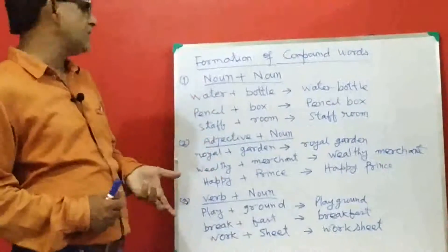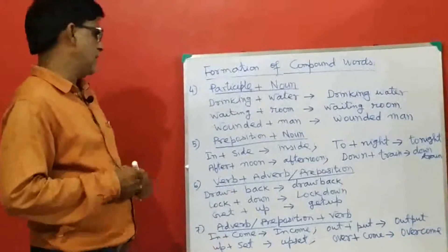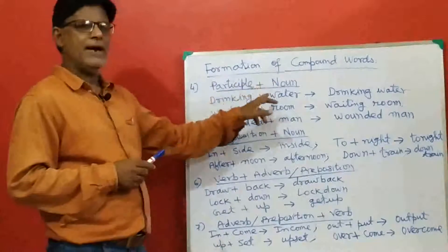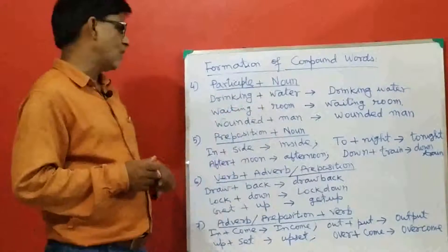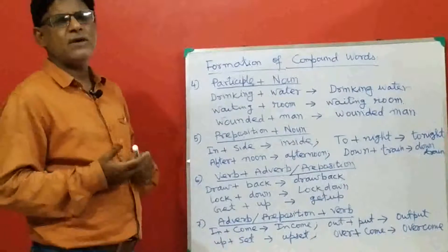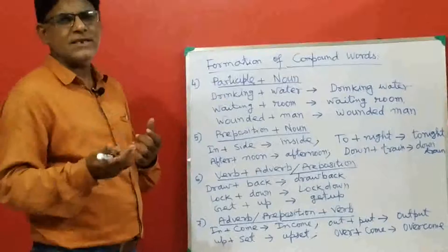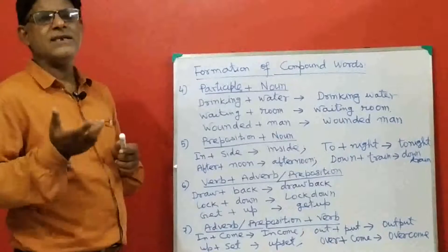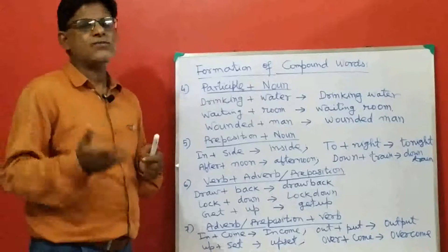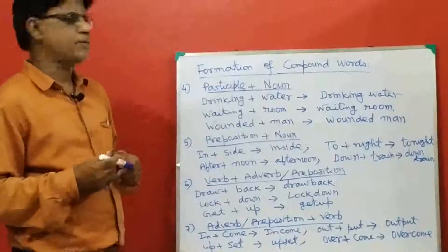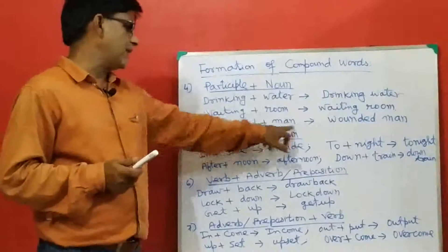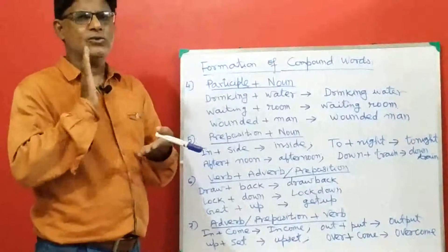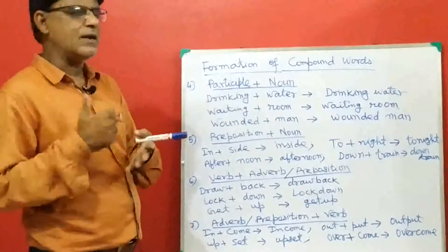There are also other methods to form compound words. Number four: compound words are made by joining a participle and a noun. For example, drinking plus water gives drinking water. A verb ending in -ing is called a present participle, and the past form of a verb is called a past participle — for example, wounded. So wounded plus man gives wounded man, and waiting plus room gives waiting room.